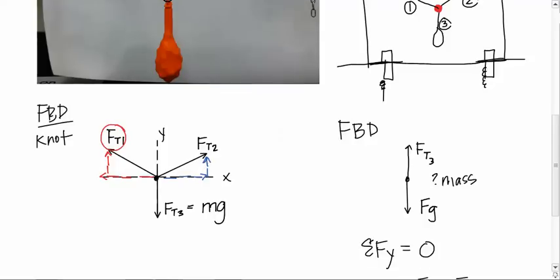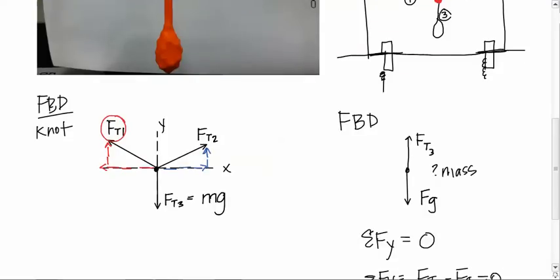Remember in math class you would never add 2x plus 4y and get 6xy. No way. Your math teacher would be so sad about that. For the same reason that you can't add x and y together in math class, we can't add x's and y's together with vectors. So we have our x components and our y components.